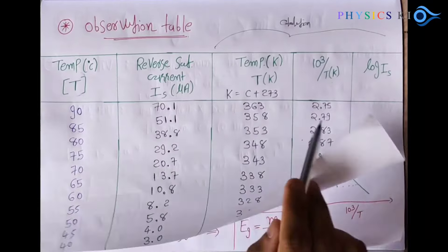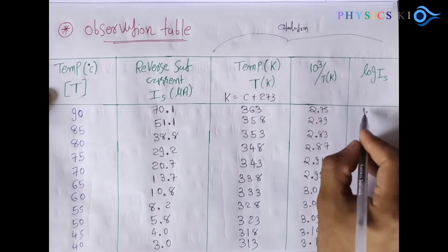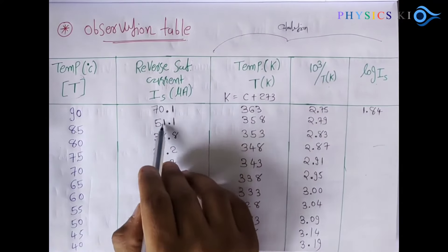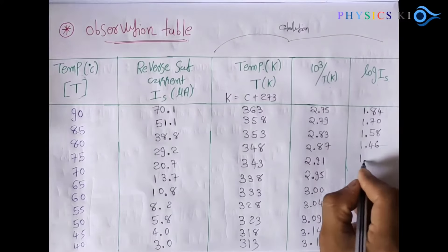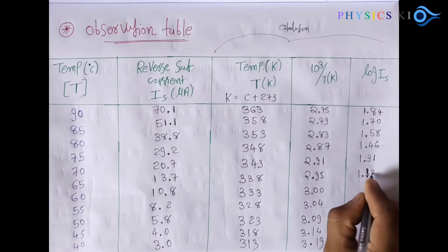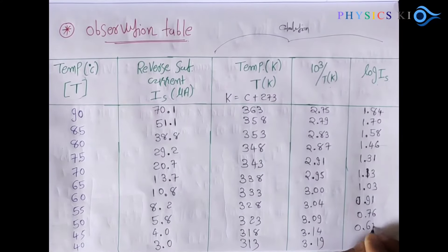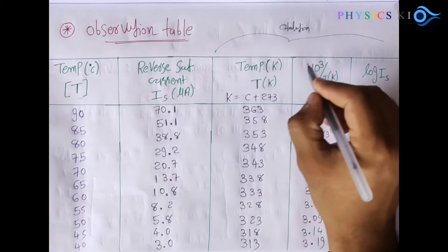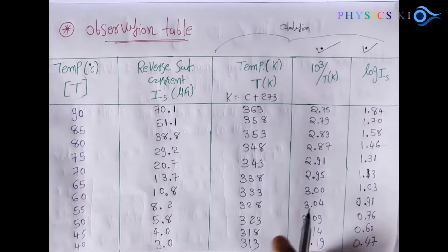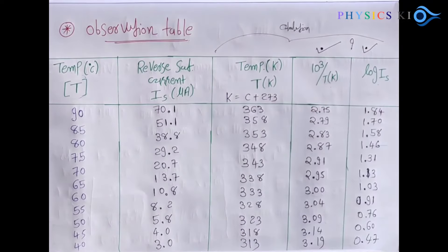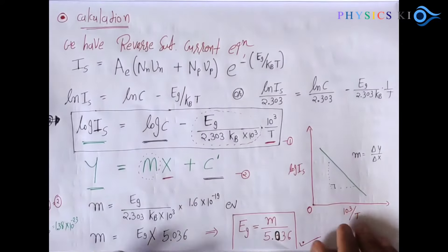The last column is log(Is). For example, log(70.1) = 1.84, and log(51.1) = 1.70. Using a calculator, prepare the full column for log(Is). These two columns — 10³/T and log(Is) — will be used to prepare a graph for the calculation.